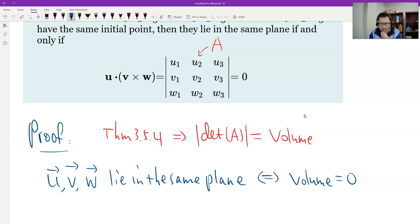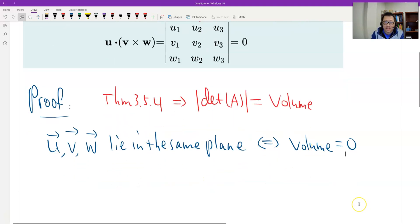Because if the volume is zero, it means these three vectors cannot form a parallelepiped. If they cannot form a parallelepiped, therefore the volume is zero. Forward and backward, therefore equivalent. And then the volume equals zero means the determinant is zero. The volume equals zero means determinant of A equals zero.